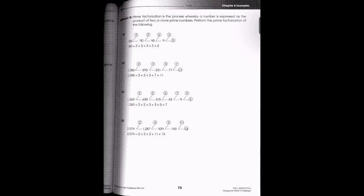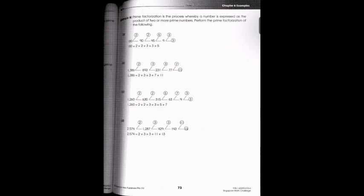If we have a number like sixty, we break it down into six and ten. Six can be further broken down to two times three, and ten can be further broken down into two times five. All of these numbers are prime numbers. So the prime factorization of sixty is two times two times three times five, which in proper expression is two to the power of two times three times five.